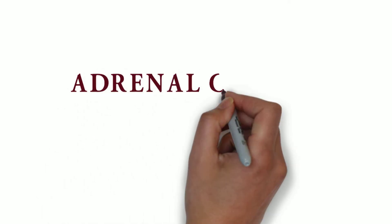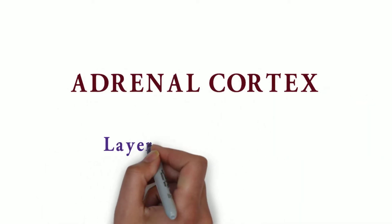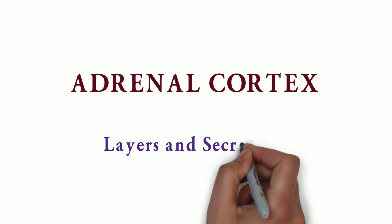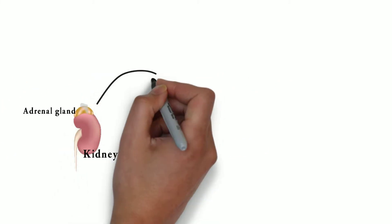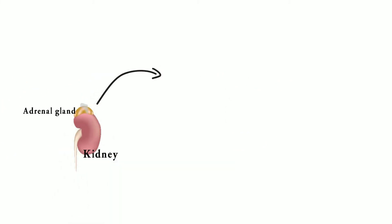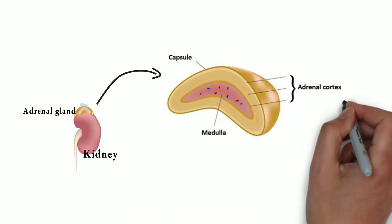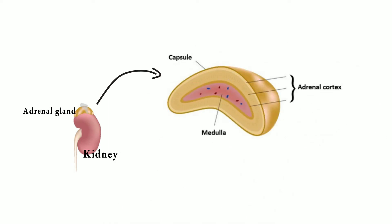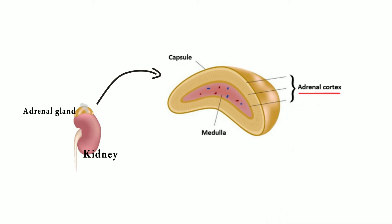Hello friends, this video is about a mnemonic for adrenal cortex layers and its secretions. Adrenal glands are endocrine glands that produce a variety of hormones. Each gland has a capsule, an outer cortex, and an inner medulla. This video is about the adrenal cortex.